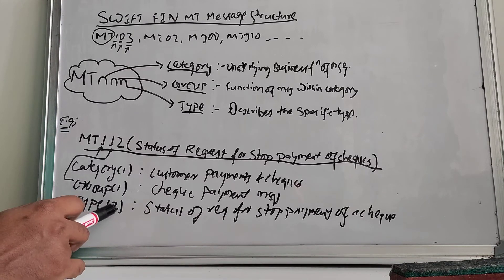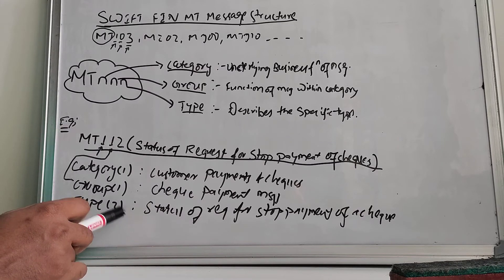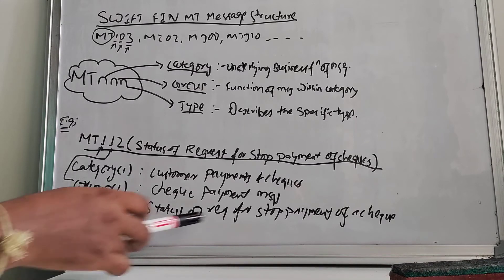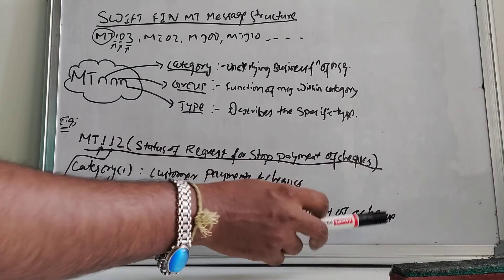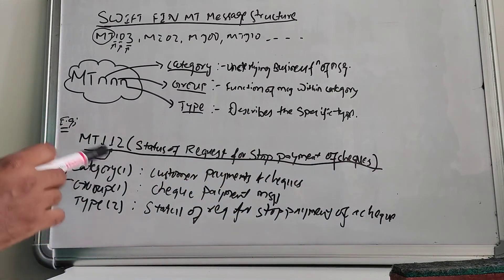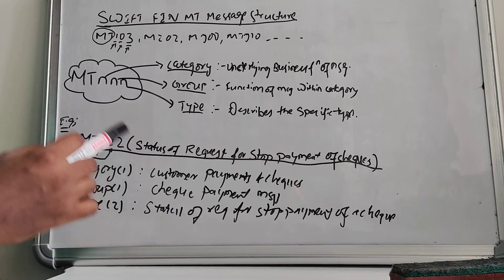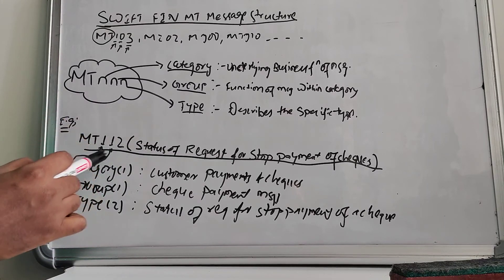The third one is type. Type 2 signifies the status. The status of what? Status of the request for the stop payment of the check. This is how it is defined and the logic behind using each digit after MT in each MT message.